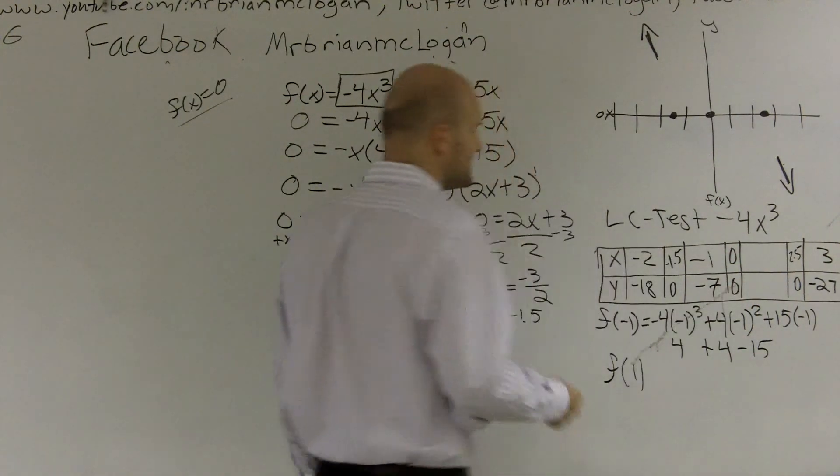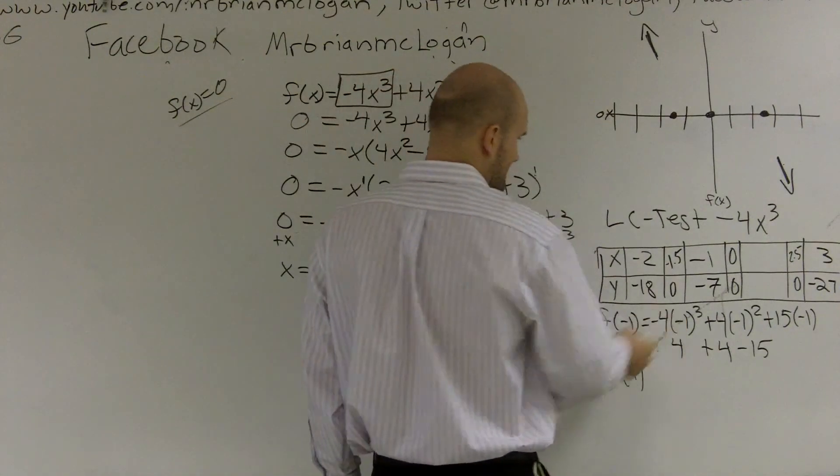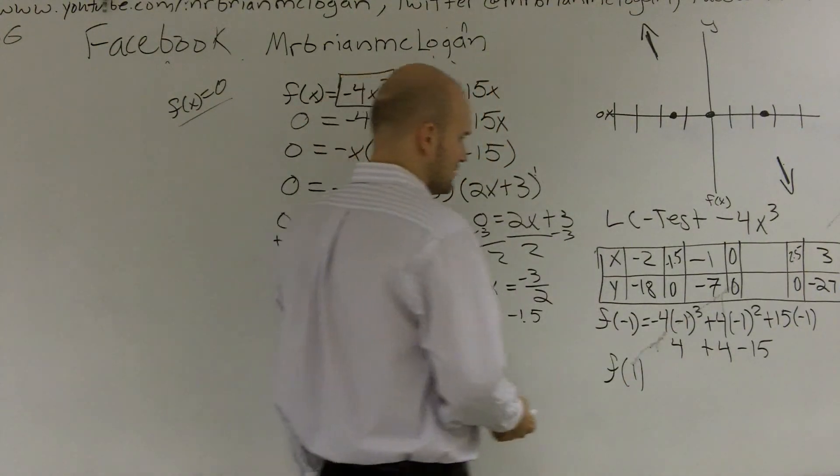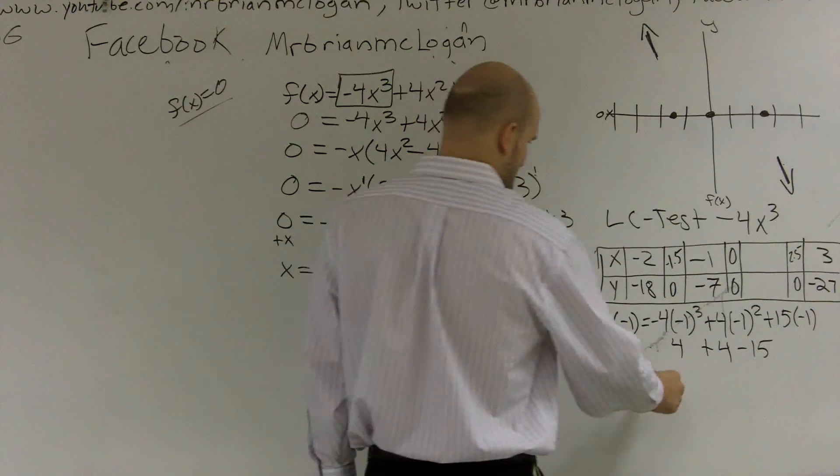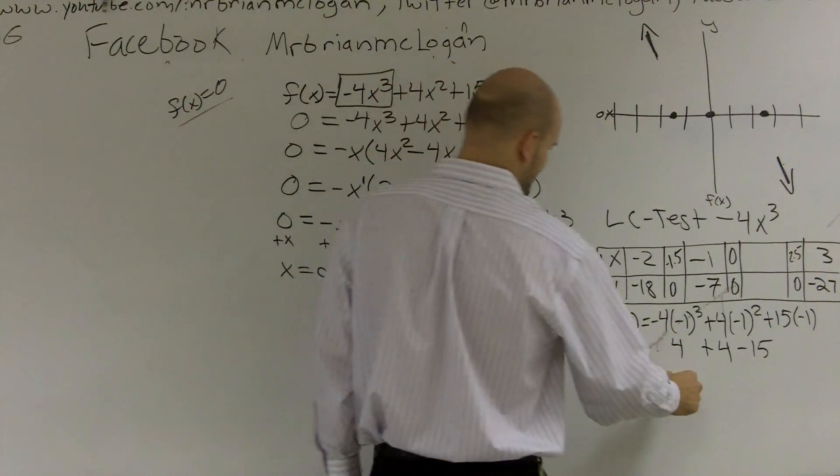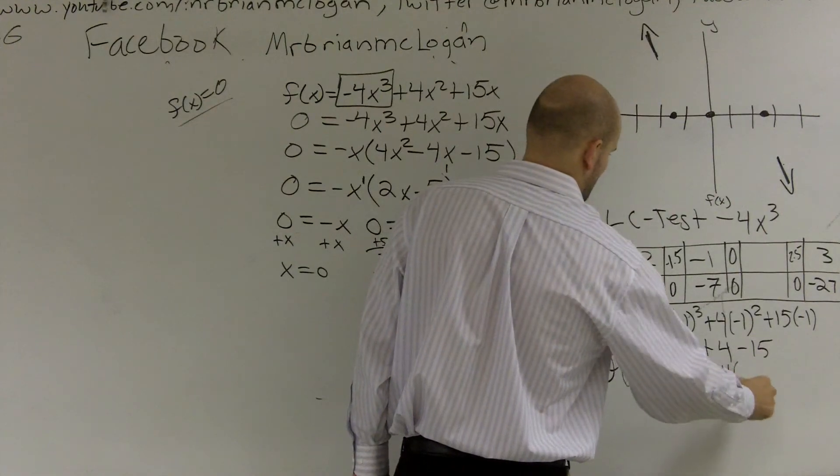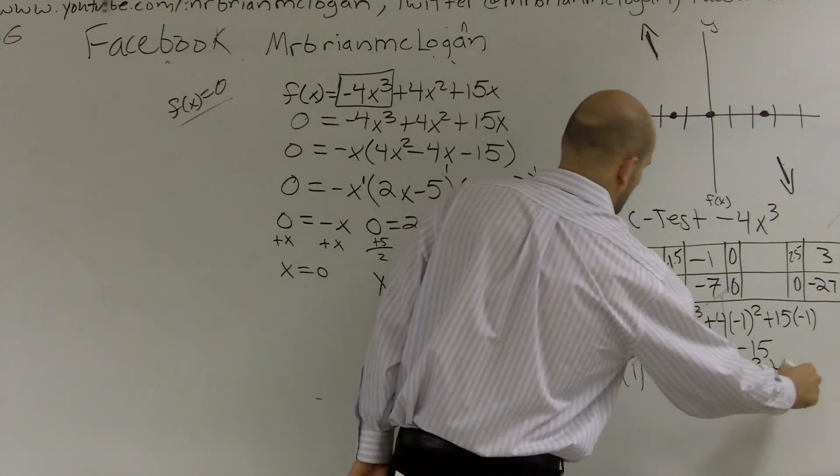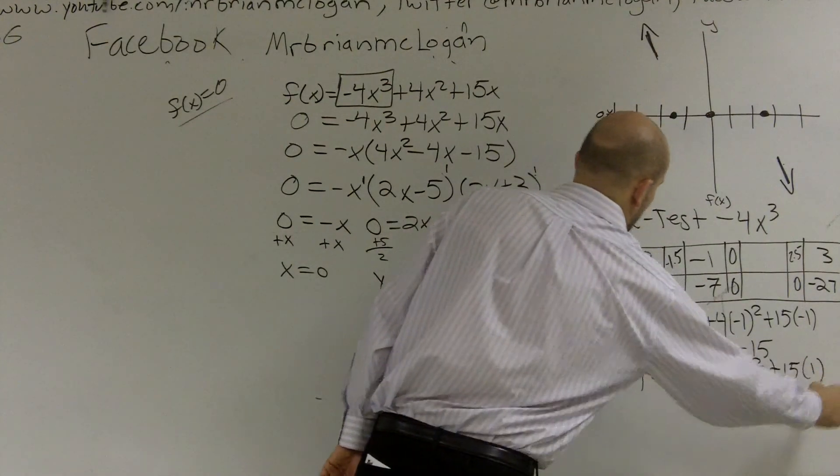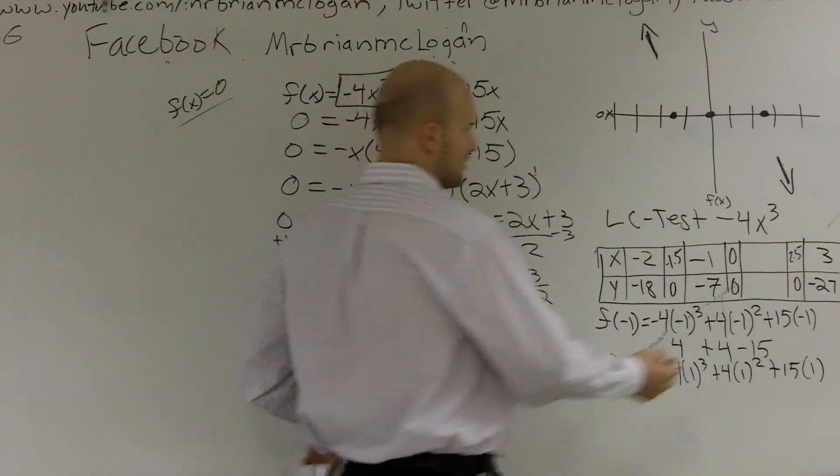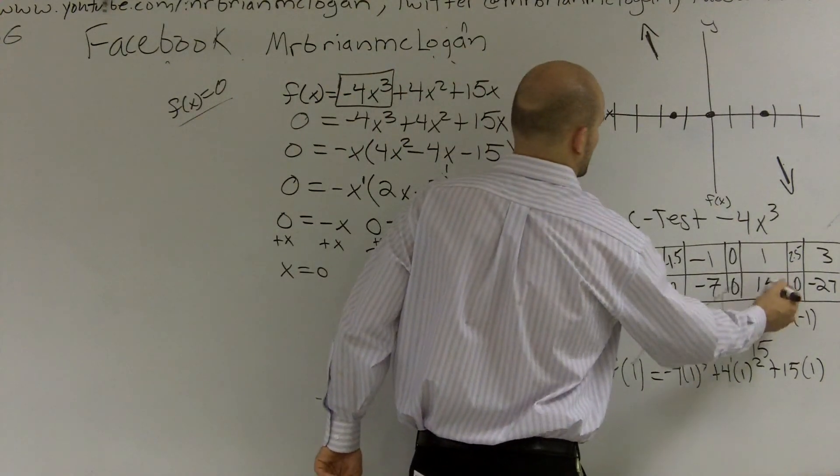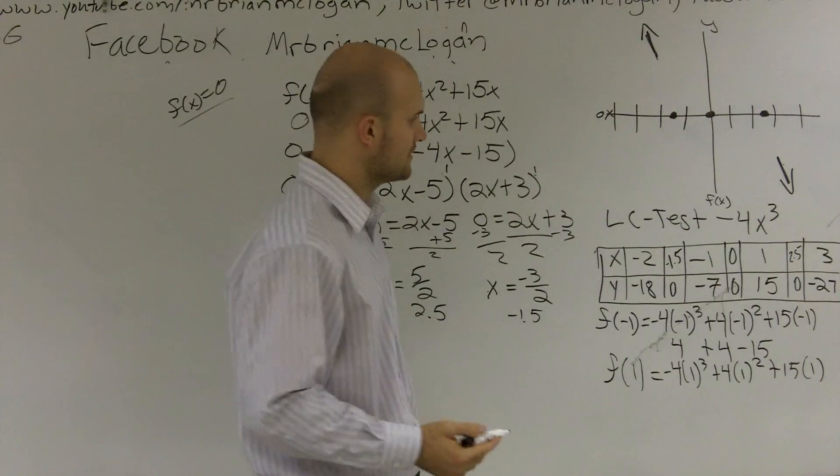And for f of 1, you do the exact same thing, but these are all going to be positives. So what you actually end up getting is, I'll just write it out. All right? And I end up getting, when I do my math, I get 15. So therefore, I go over to negative 1 and I go down 7.